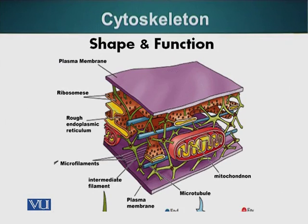The shape of a cell is also very important for its function. For example, red blood cells are a particular shape and they are flexible, which allows them to squeeze through narrow blood vessels. Neurons, on the other hand, make these long processes that allow them to communicate with cells at a great distance. If red blood cells had these long processes, they would not be able to do their function, and if neurons did not have these long processes, they would not be able to do their function either.